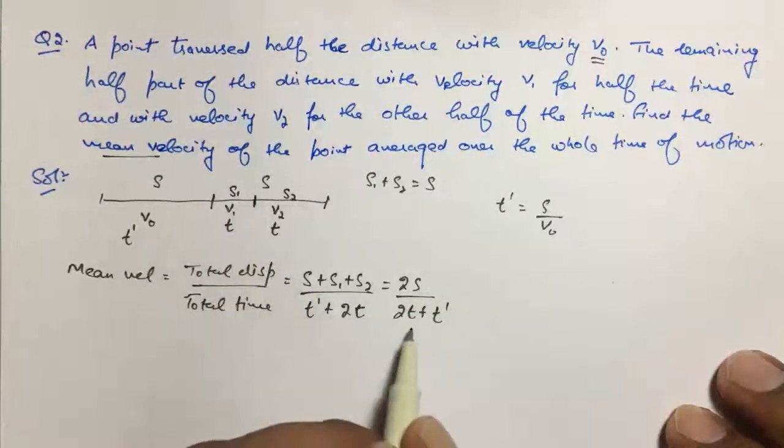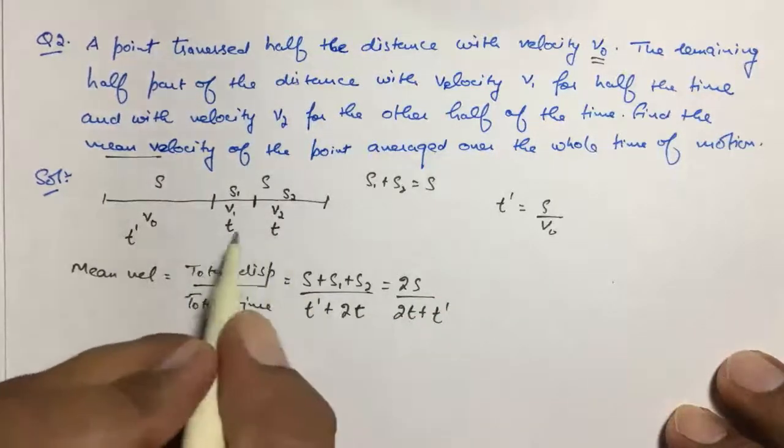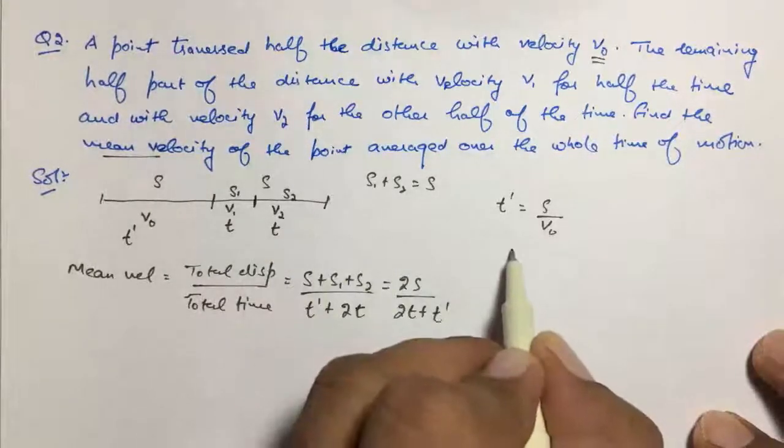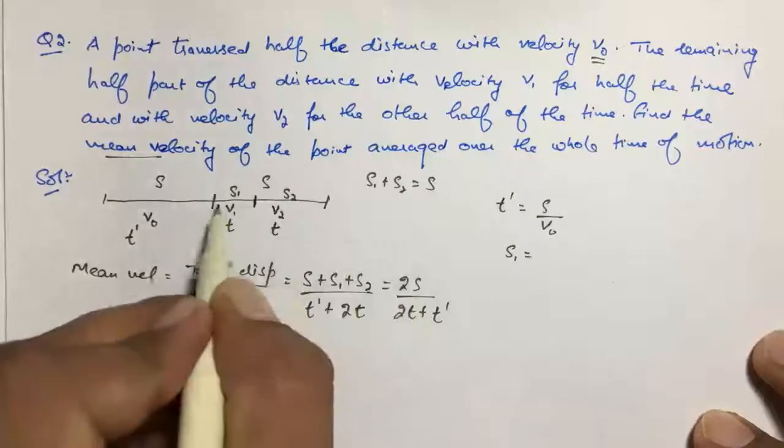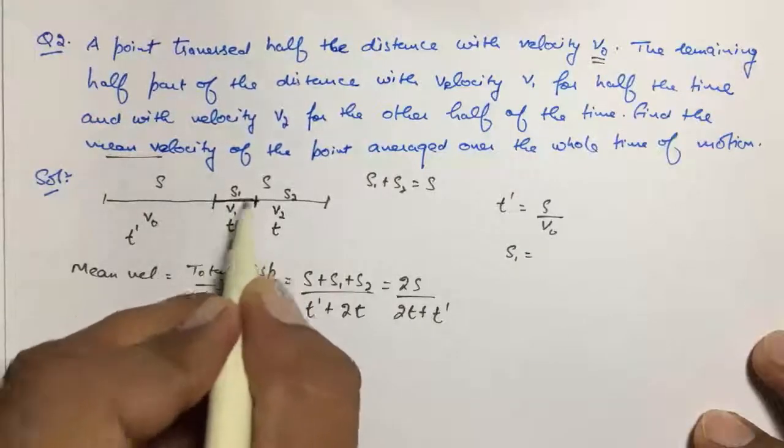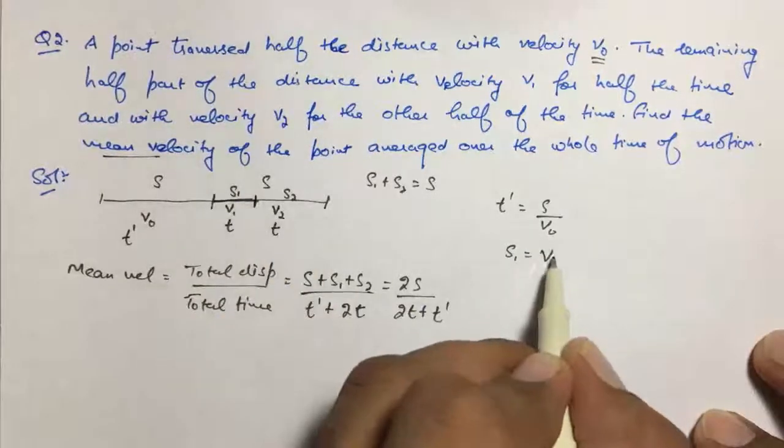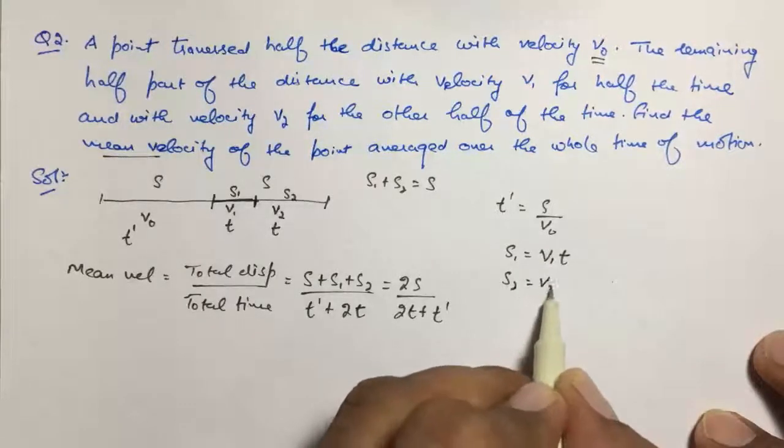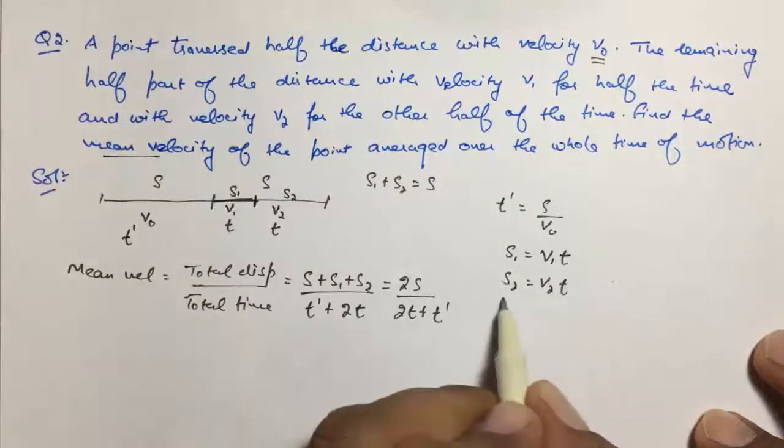Now we have to convert this T in terms of S. Since the motion is uniform, S₁ equals V₁ times T and S₂ equals V₂ times T. Adding both.